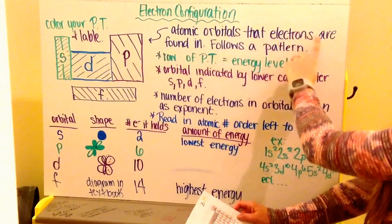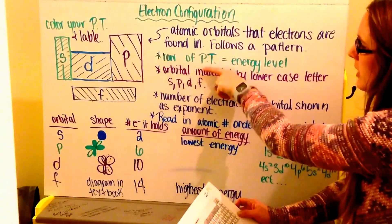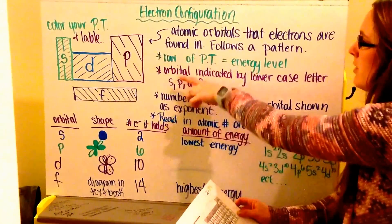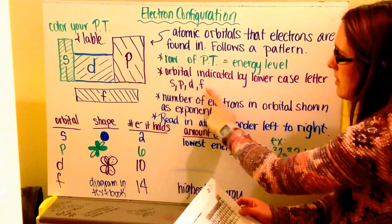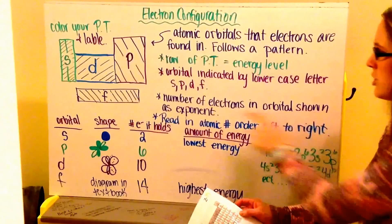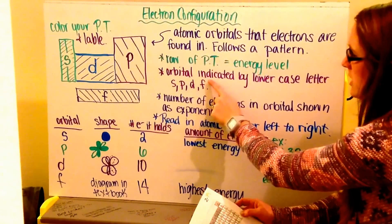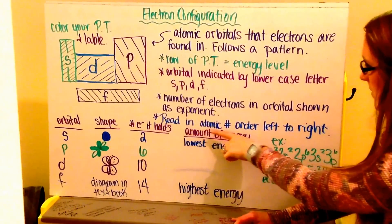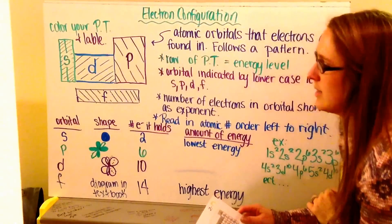Atomic orbitals that electrons are found in follow a pattern. The row of the periodic table is equal to the energy level, just like in Bohr's model. The orbital is indicated by a lowercase letter S, P, D, or F. The number of electrons in an orbital is shown as an exponent raised above the orbital. We read in atomic number order left to right, and we'll go through some examples with the periodic table in a moment.